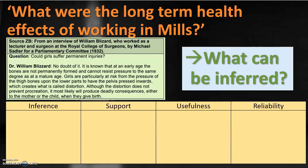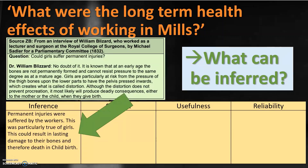Let's have a look at how this works in practice. We've kept the same question: what were the long-term health effects of working in mills? And I've picked this source — an interview with William Blizzard, a lecturer and surgeon, interviewed for a parliamentary committee. The first thing we need to look at is inference: what can we take from the source and learn about our question? This source tells us that permanent injuries are suffered by workers, particularly girls, that this can result in lasting damage to their bones, and it details some of the problems that can occur during childbirth. We've read the source and pulled out the key elements that tell us something about our question.